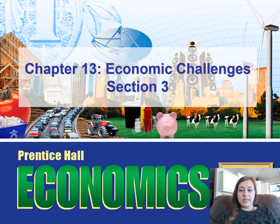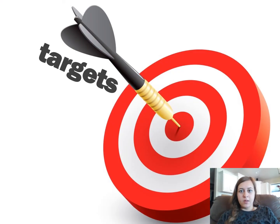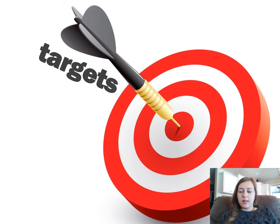Welcome back for the last section of Chapter 13. Today we're going to be talking about the challenge of poverty. We'll look at government standards and how the government defines poverty, talk about the causes of poverty, look at distribution of income in the United States, and then discuss some government policies that have been enacted with the intention of combating poverty.